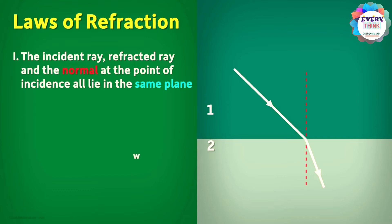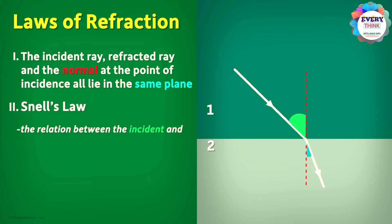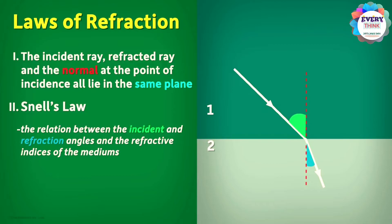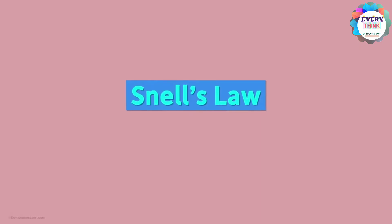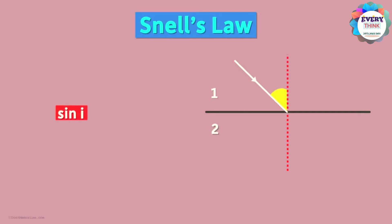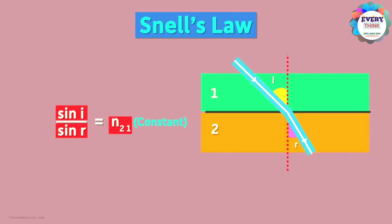The second law is also called Snell's law of refraction. Snell's law gives us the relation between the incident and refraction angles and the refractive indices of the media. In simple words, it tells us that the ratio of the sine of the angle of incidence to the sine of the angle of refraction is equal to the refractive index of the second medium with respect to the first medium. This ratio is constant for light of a given colour and for a given pair of media.